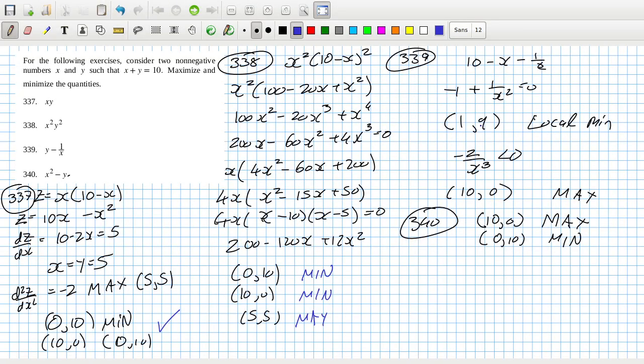So maximum, they said, is 1, 9. But 10, 0 would be the maximum. Wouldn't it? Because of 339,